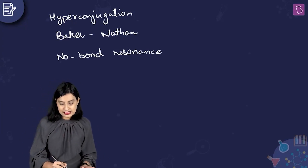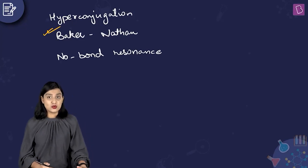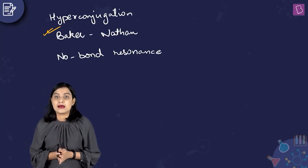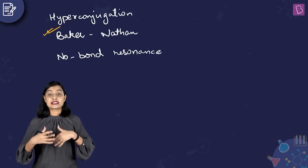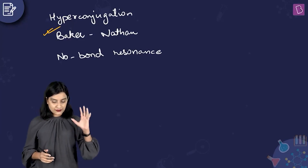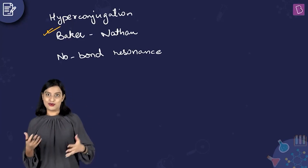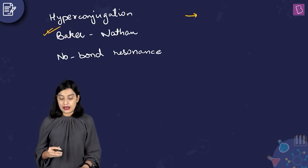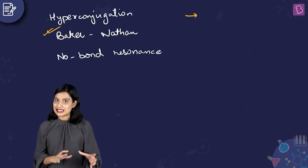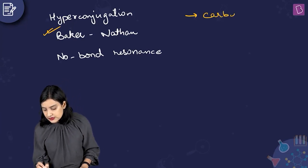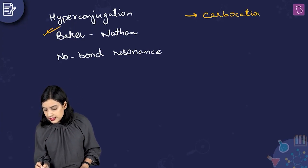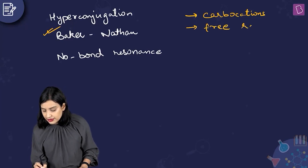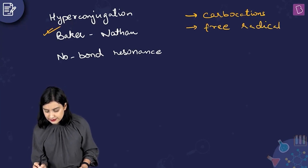It has happened in the past that at some places Baker-Nathan effect has been used, although technically speaking it's a little bit different. But for the purposes of competitive examinations, you can understand that Baker-Nathan effect is the same as hyperconjugation effect. It's also called no bond resonance.